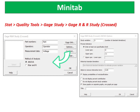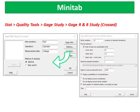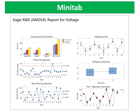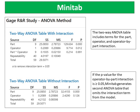What is the difference between the two methods? For the ANOVA method, this provides an additional test for the interaction between the operators and the parts, beyond just the operator main effect. However, for the X-bar R method, or average and range method, there is no interaction study between the operators and the parts. Minitab uses the analysis of variance (ANOVA) procedure to calculate variance components, and then uses those components to estimate the percent variation due to the measuring system. The two-way ANOVA table includes terms for the part, operator, and operator-by-part interaction. If the p-value for the operator-by-part interaction is greater than or equal to 0.05, Minitab generates a second ANOVA table that omits the interaction term from the model.